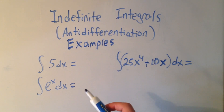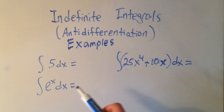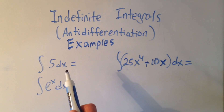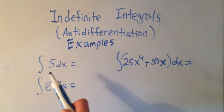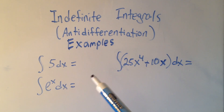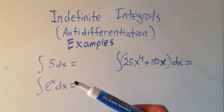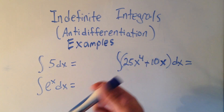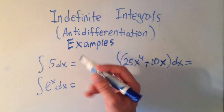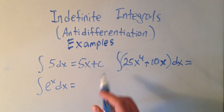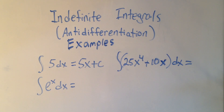Let's do some quick examples of indefinite integrals. The integral of 5 dx — there's no x's in here. If you remember that when you took the derivative of 5x, the x would just go away and you would just get that constant out front. So that's one reason that this is 5x plus c. We're always adding plus c.